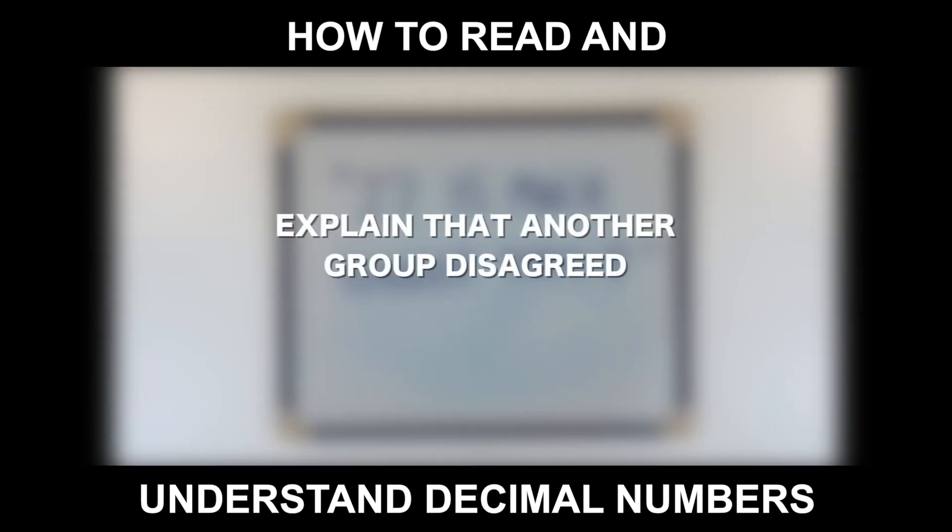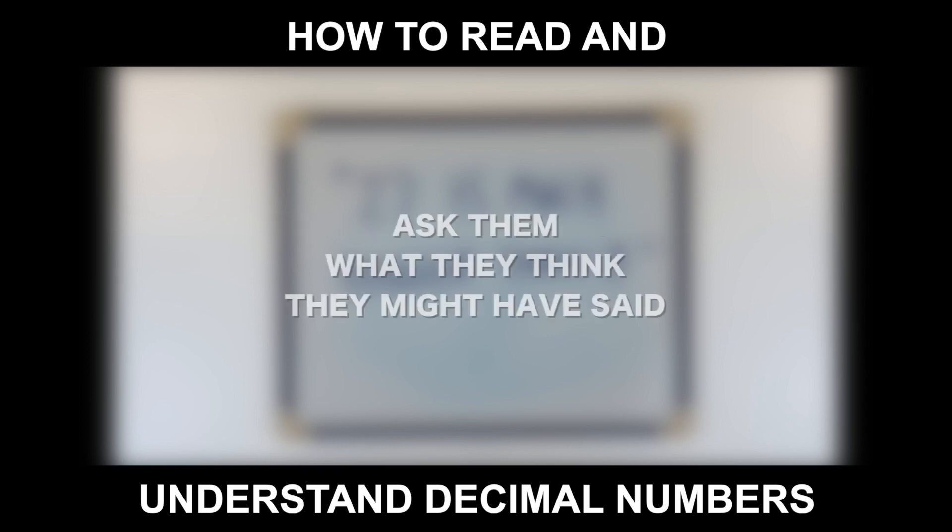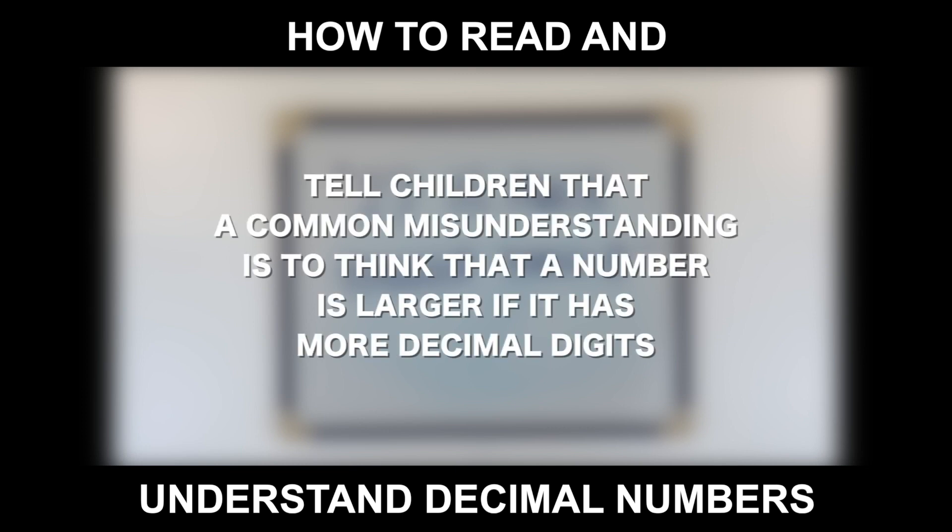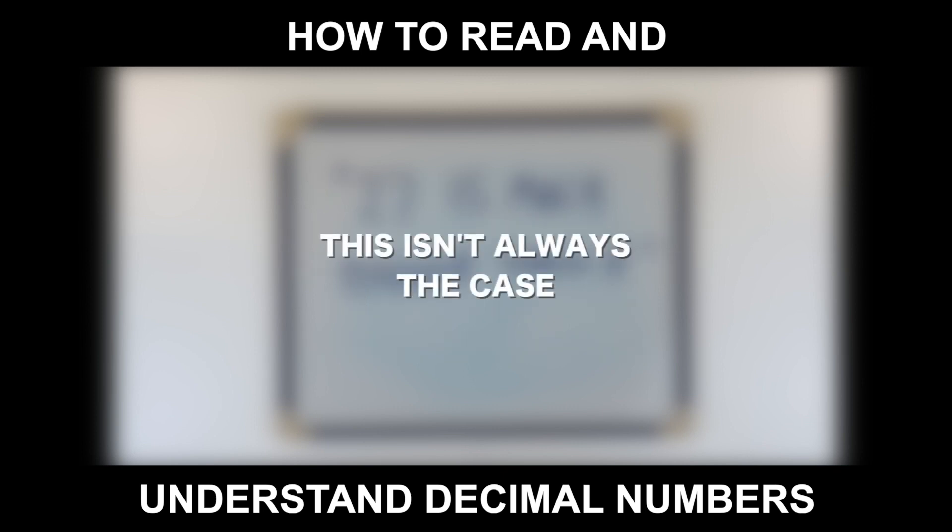Explain that another group disagreed. Ask them what they think they might have said. Tell children that a common misunderstanding is to think that a number is larger if it has more decimal digits, but this isn't always the case.